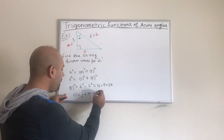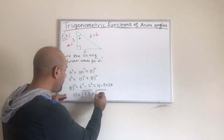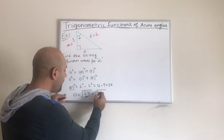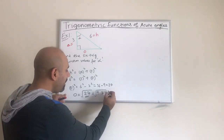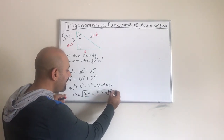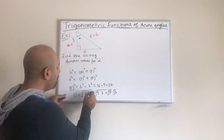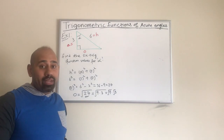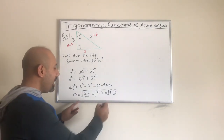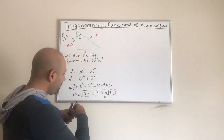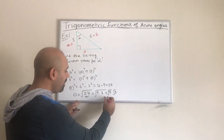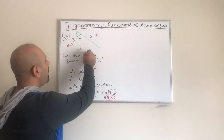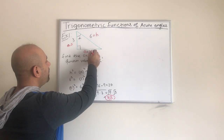I'm going to break 27 as nine times three, and then further as square root of nine times square root of three. We try to break the number into a product of two so that at least one is a perfect square. The square root of nine is three, so I have three radical three. That is the length of my opposite side. Now I have all three sides.